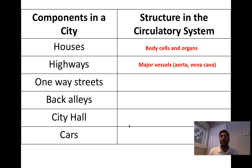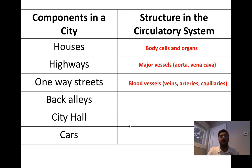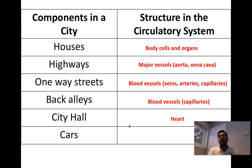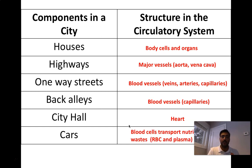The major blood vessels — the aorta and the large vein entering the heart called the vena cava — are the largest blood vessels in the body. You've got one-way streets, which are your smaller blood vessels: your veins, arteries, and capillaries. Back alleys are blood vessels that don't carry a lot of traffic — things coming in and out of driveways — those are your capillaries most specifically. City hall, where decisions get made, is like the heart. And your cars and vehicles are your actual molecules and cells — red blood cells, plasma, and wastes — being transported throughout these highways.